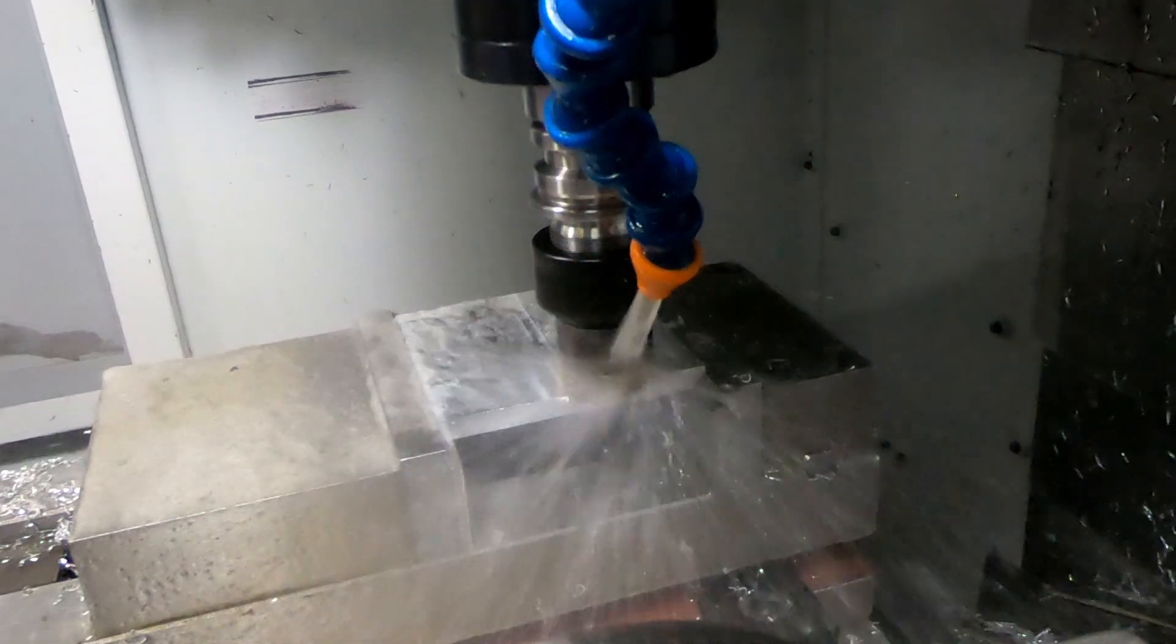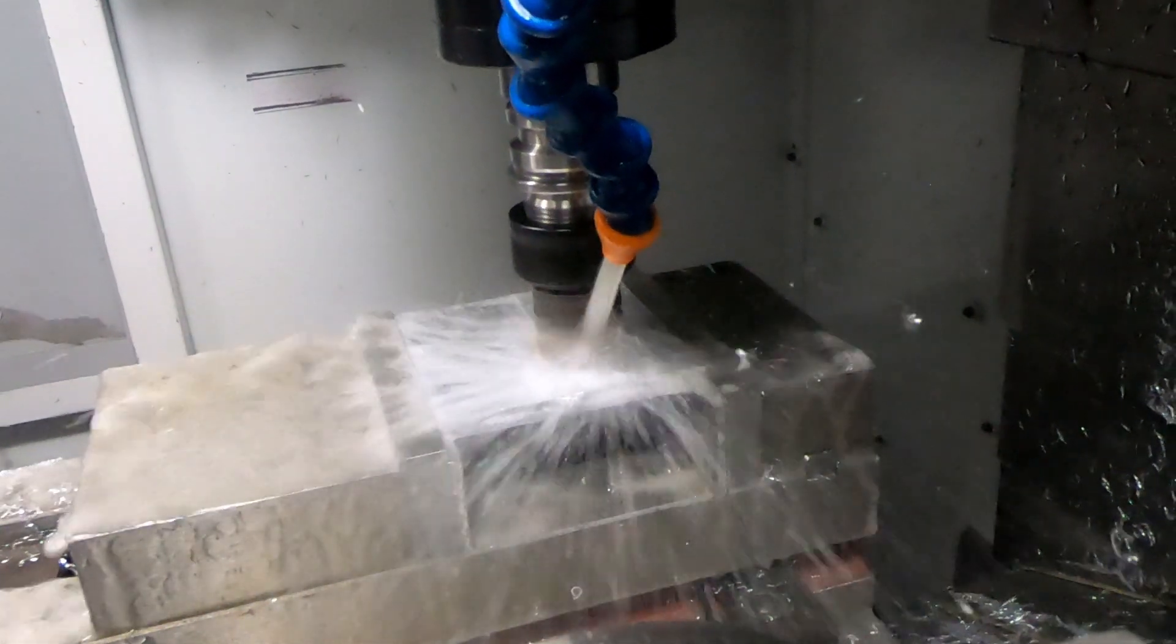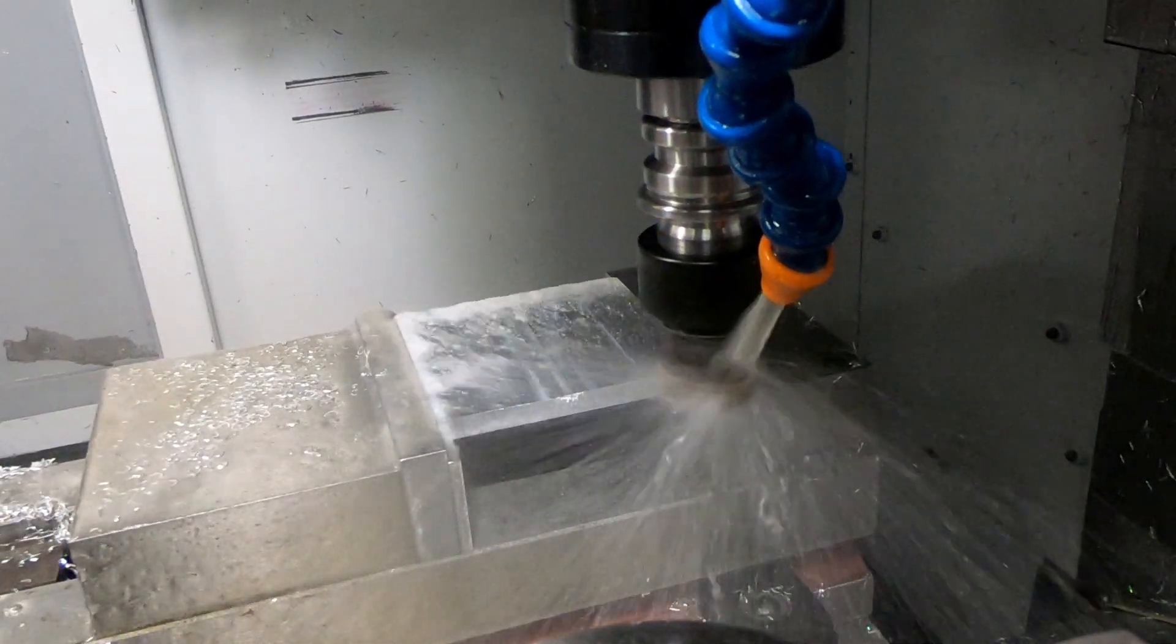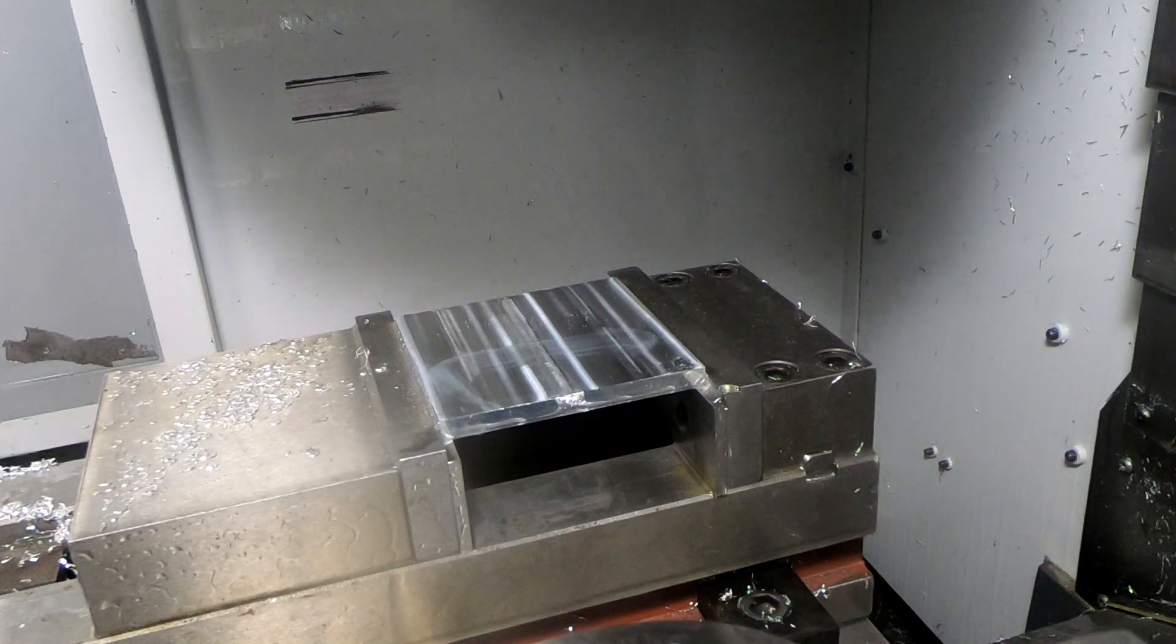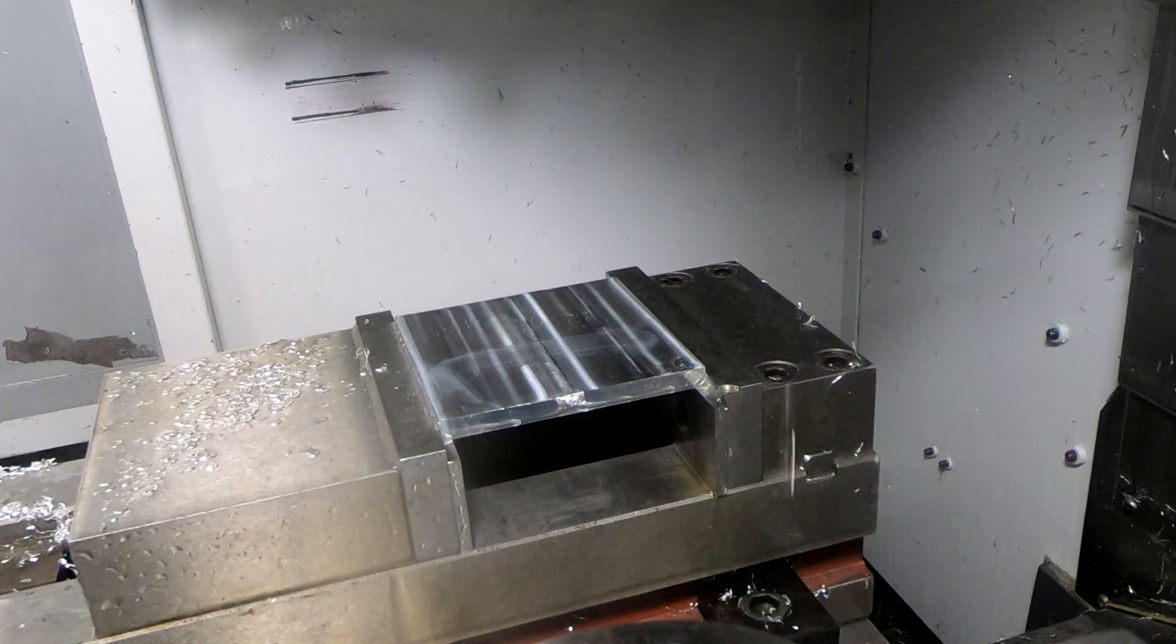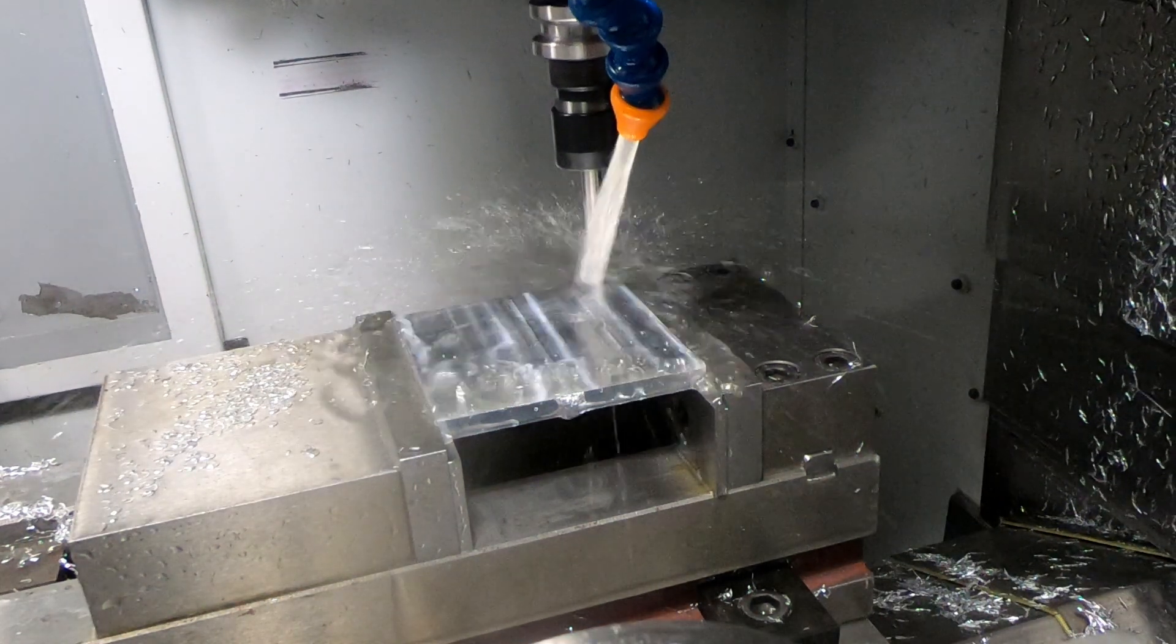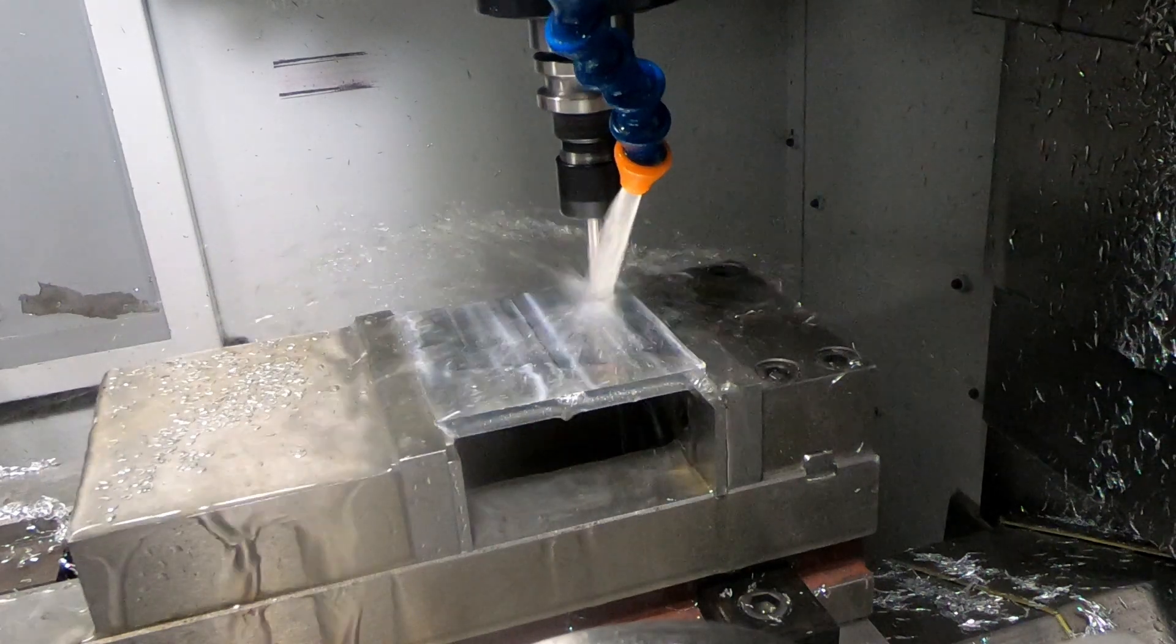First is facing with this 1 inch diameter shell mill, which apparently does not have the correct inserts for aluminum. So I'm going to need to find some.